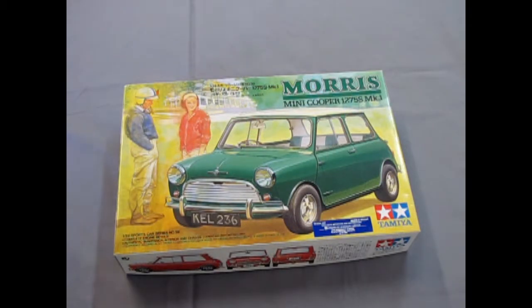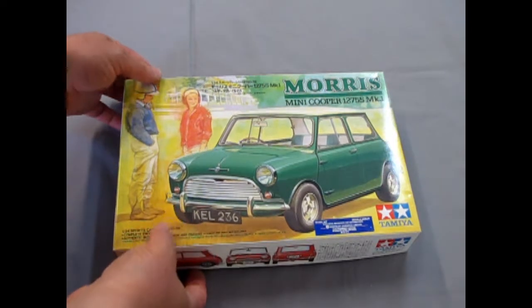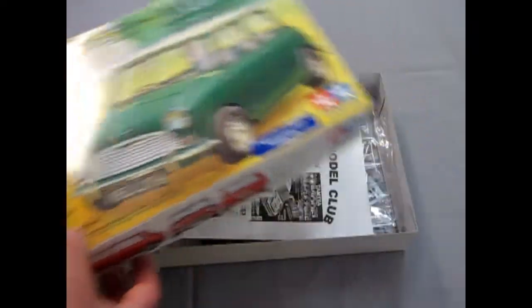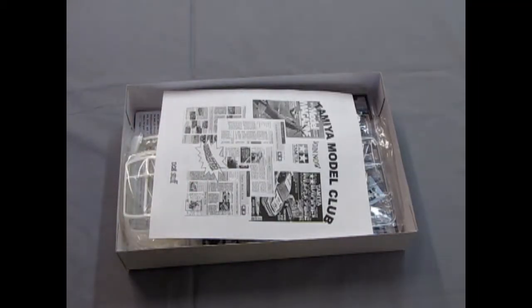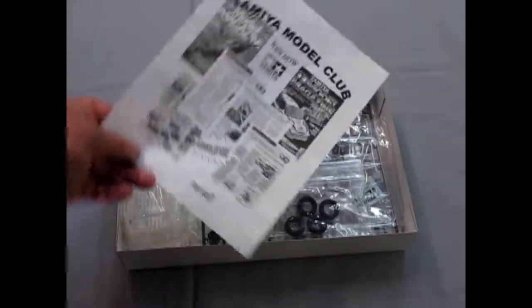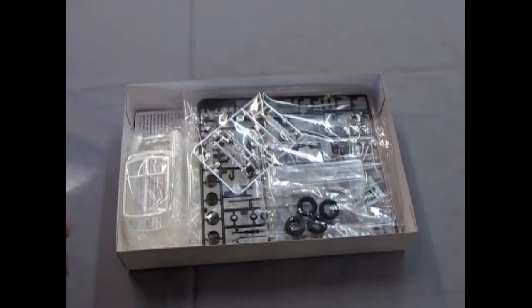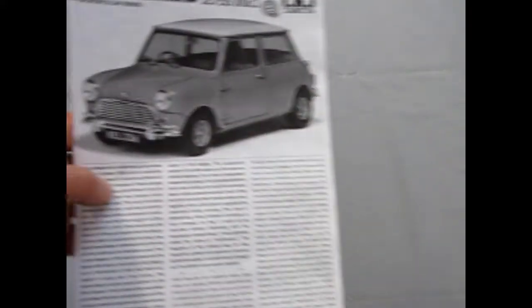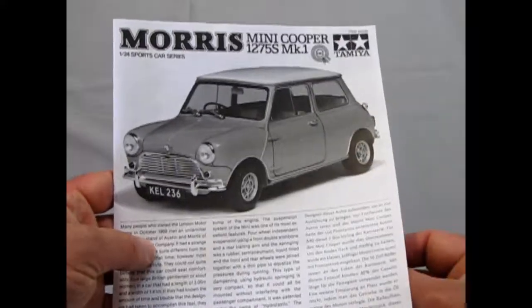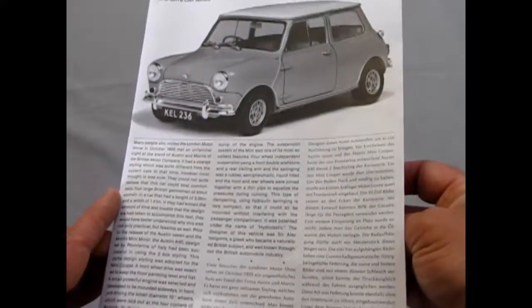So now we'll take a look at the Morris Mini Cooper 1275S Mark 1 by Tamiya. Now this is a cute little car. It comes with the Tamiya Model Club newsletter. Very interesting. Okay, let's just move this over here and I just need to dig the instructions out which just happen to be on the very bottom. Okay, here we are, the instructions for the Morris Mini.